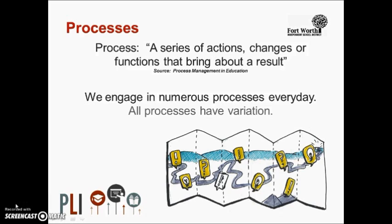Changes in processes are called variation. Variation occurs when something happens in the process you don't want or expect. Every process will have problems or issues that cause something not intended — this is where the headache occurs. The better the design of the process, the less variation.